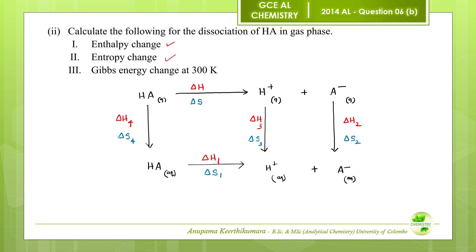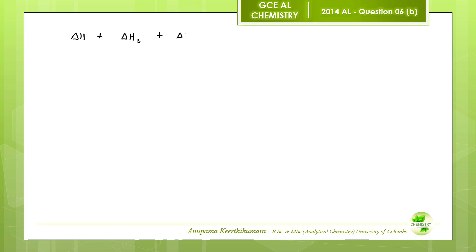We can identify two routes — route 1 and route 2. According to Hess's law, the sum of enthalpy changes of route 1 equals the sum of enthalpy changes of route 2. This is the same for entropy changes. According to Hess's law: delta H plus delta H3 plus delta H2 equals delta H1 plus delta H4. Therefore, delta H equals delta H1 plus delta H4 minus delta H3 minus delta H2.